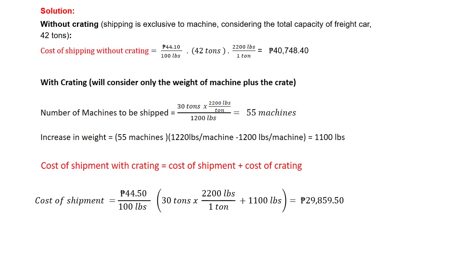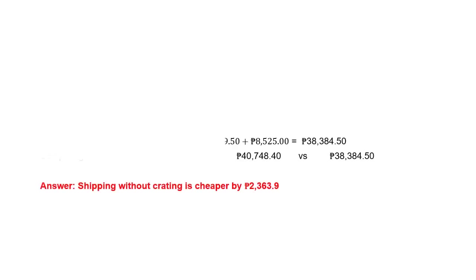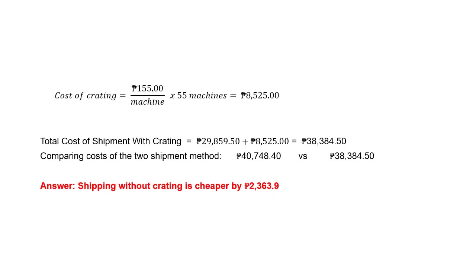The 30 tons represents the average weight shipped in a year. After converting tons to pounds, the units cancel out, and adding the 1,100 pounds increase yields the shipment cost. The cost of crating is 155 pesos per machine times 55 machines, which equals 8,525 pesos.